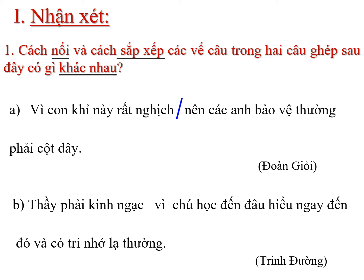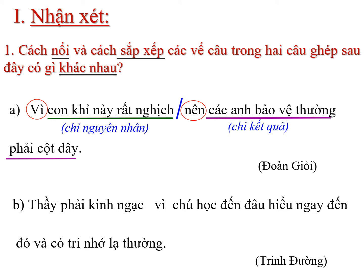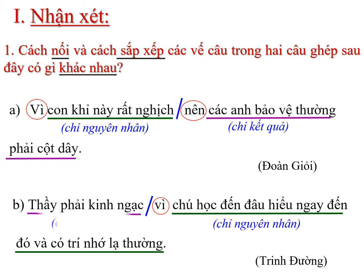Có 2 cách nối: Một là dùng từ nối, hai là nối trực tiếp. Nhìn vào câu A, ta thấy 2 vế câu được nối với nhau bằng 1 cặp quan hệ từ vì...nên. Đây là cặp quan hệ từ biểu thị nguyên nhân kết quả. Vế có quan hệ từ vì chỉ nguyên nhân, vế có quan hệ từ nên chỉ kết quả. Câu B chúng ta làm tương tự: dùng gạch chéo để ngăn cách 2 vế câu, xác định từ nối. Câu B ta thấy sử dụng 1 quan hệ từ vì. Vì là quan hệ từ cũng biểu thị quan hệ nguyên nhân kết quả. Vế có quan hệ từ vì chỉ nguyên nhân, còn vế còn lại chỉ kết quả.